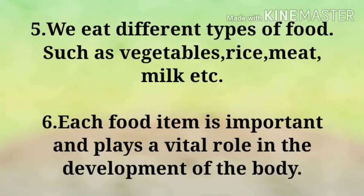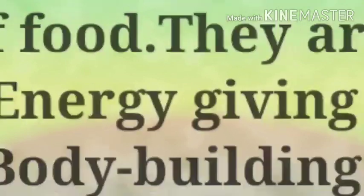Number four: eating healthy food protects us from various diseases. Number five: we eat different types of food such as vegetables, rice, meat, milk, etc. Number six: each food item is important and plays a vital role in the development of the body.